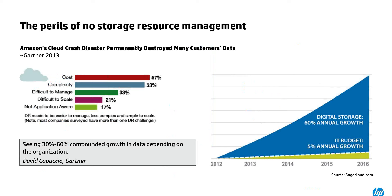Resource utilization and consumption, as well as embracing the inevitable fact that data is growing — depending on who you talk to, Forrester or Gartner — it can be anywhere from 20 to 60% annually.